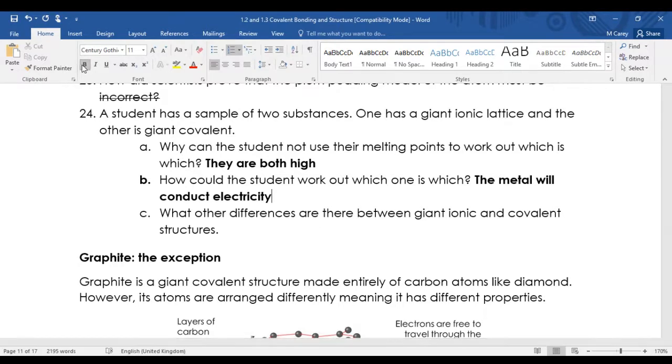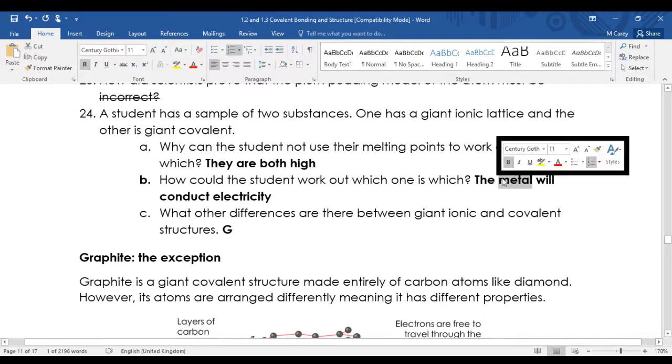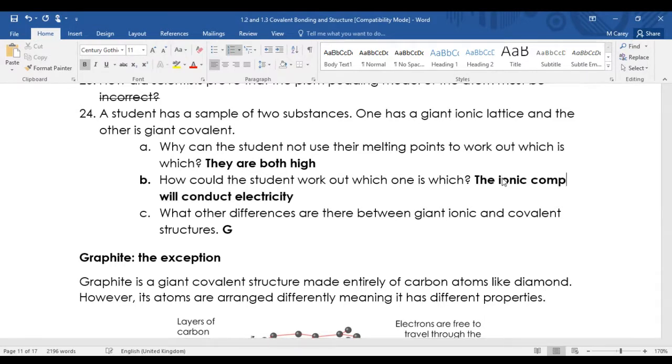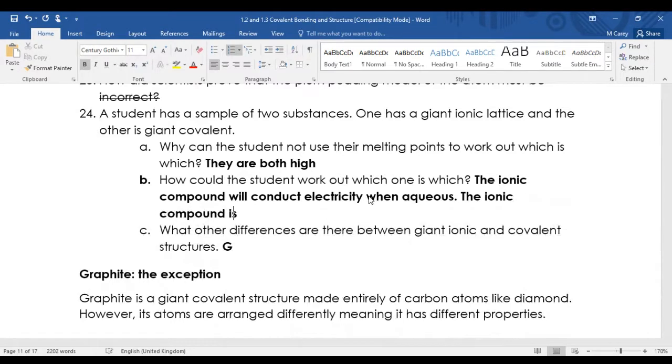What other differences are there between giant ionic and covalent structures? Giant ionic compounds conduct electricity when aqueous or molten. The ionic compounds are brittle - you can crush them. Ionic compounds dissolve in water.